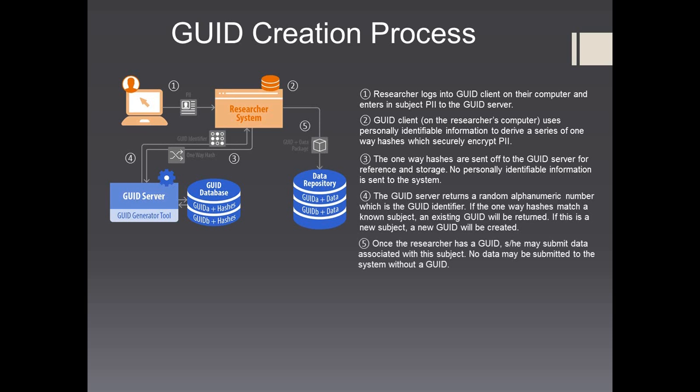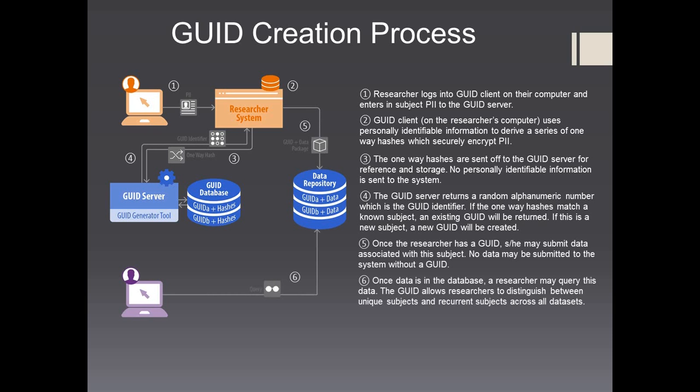Once the researcher has a GUID, he or she may submit data associated with this subject. No data may be submitted to the system without a GUID. Once data is in the database, a researcher may query this data. The GUID allows researchers to distinguish between unique subjects and recurrent subjects across all datasets.